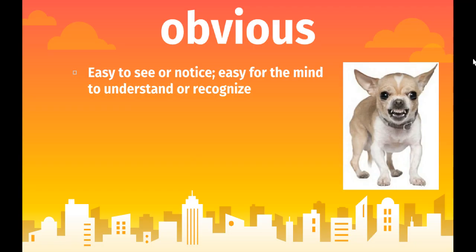Next is obvious. This is easy to see or notice, easy for the mind to recognize or understand. So you see that dog, and it is quite obvious that that dog is not happy. You can see the teeth — it is obvious that you should not play with that dog and that dog is not happy.